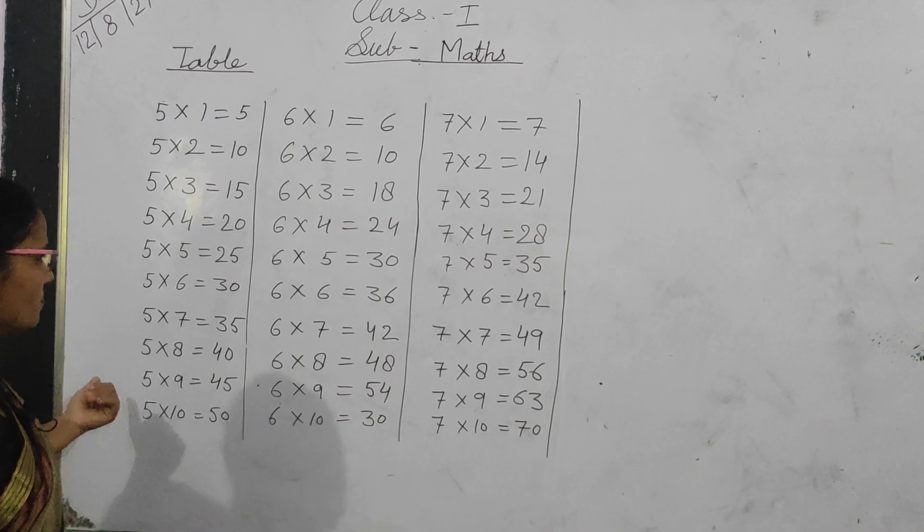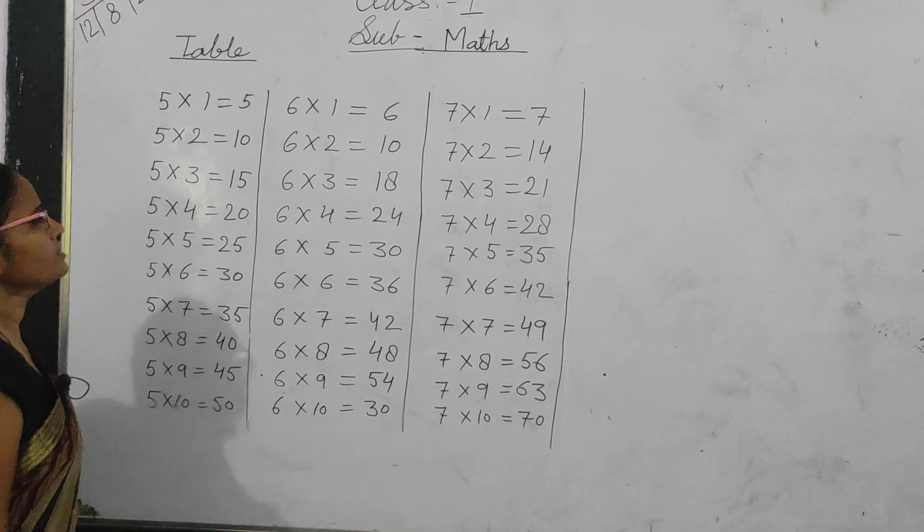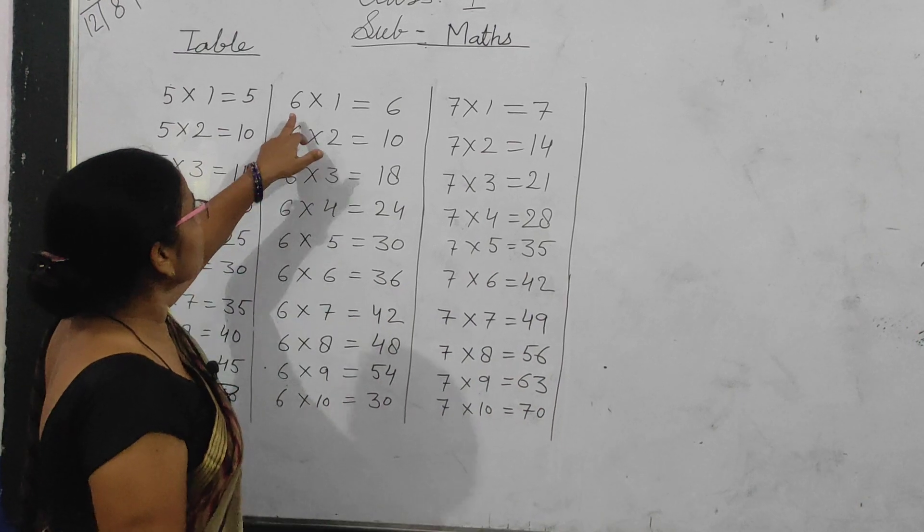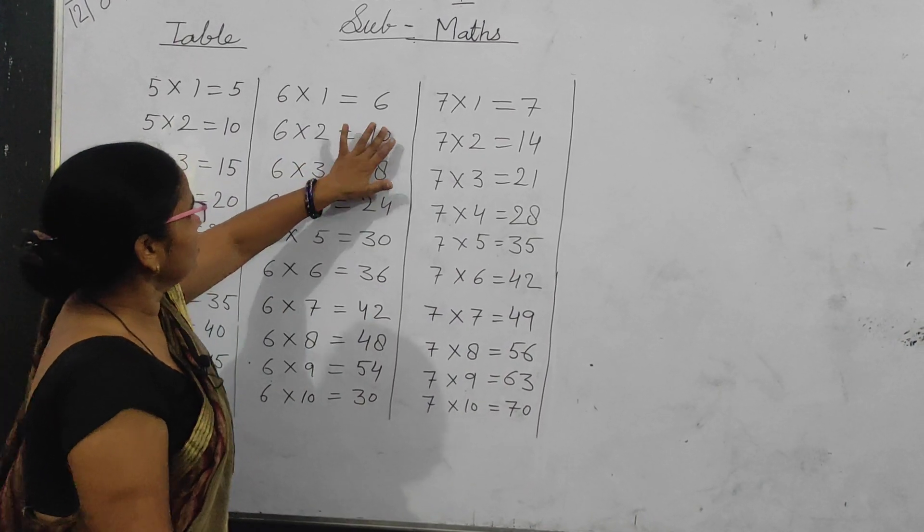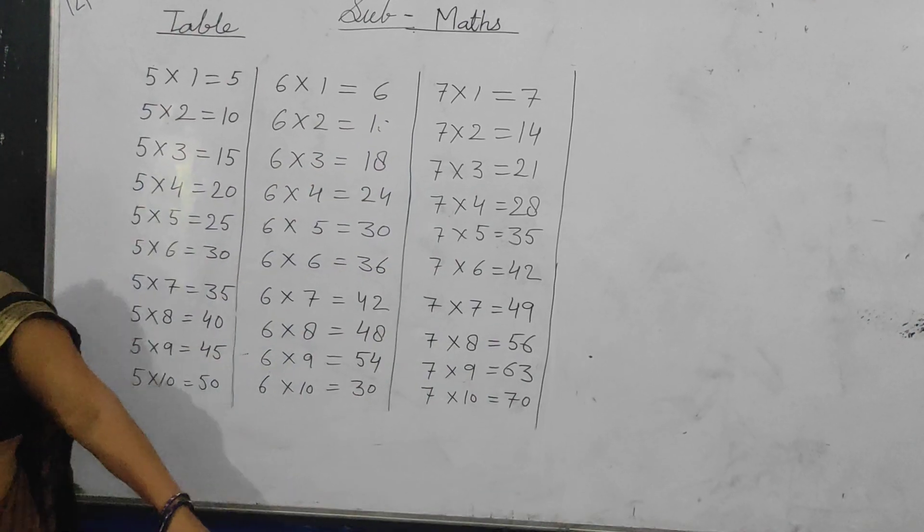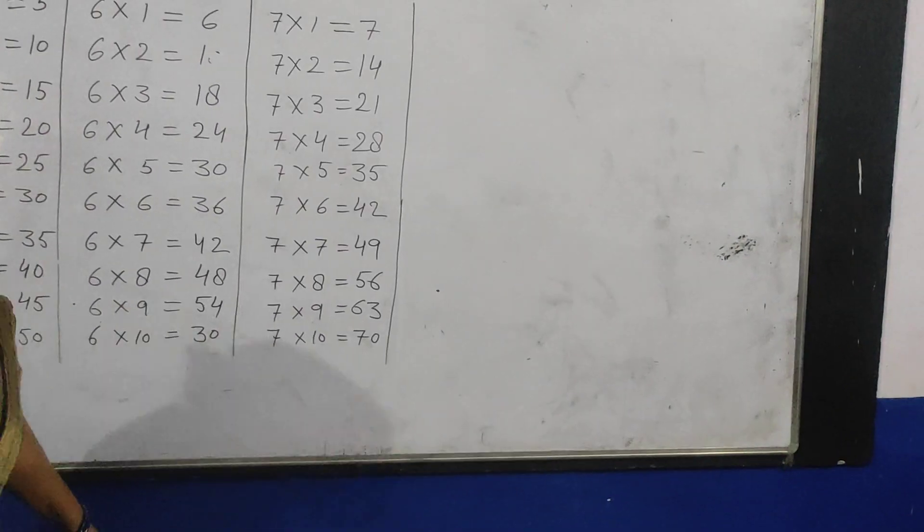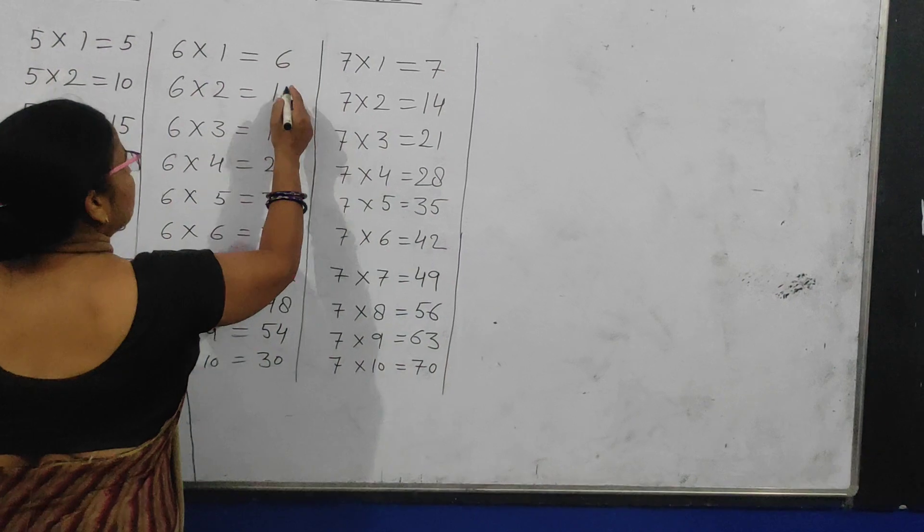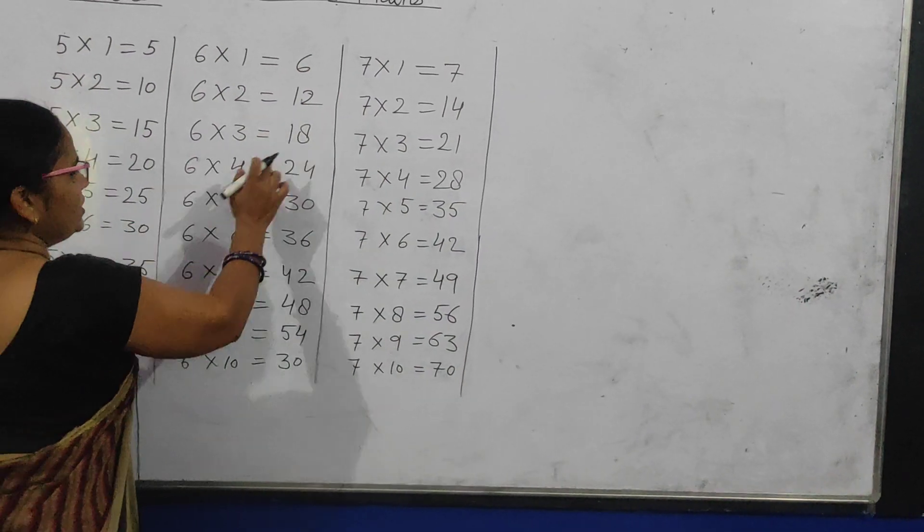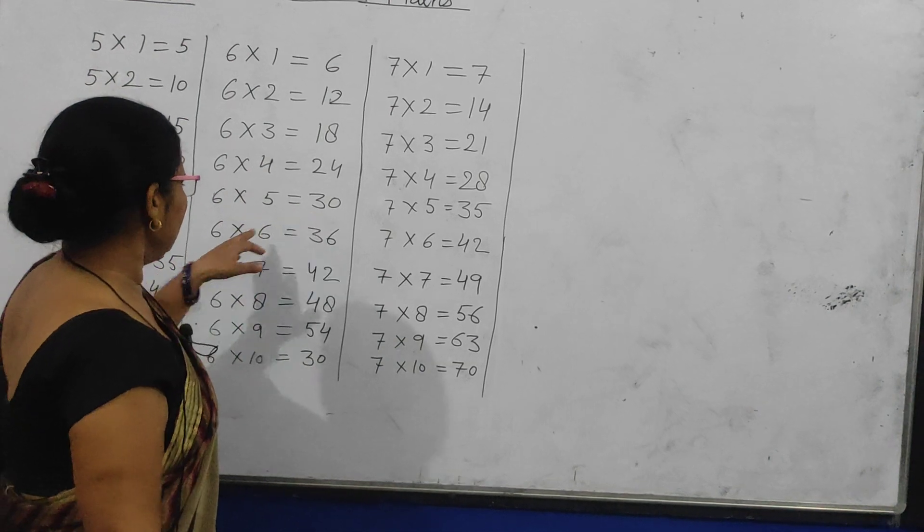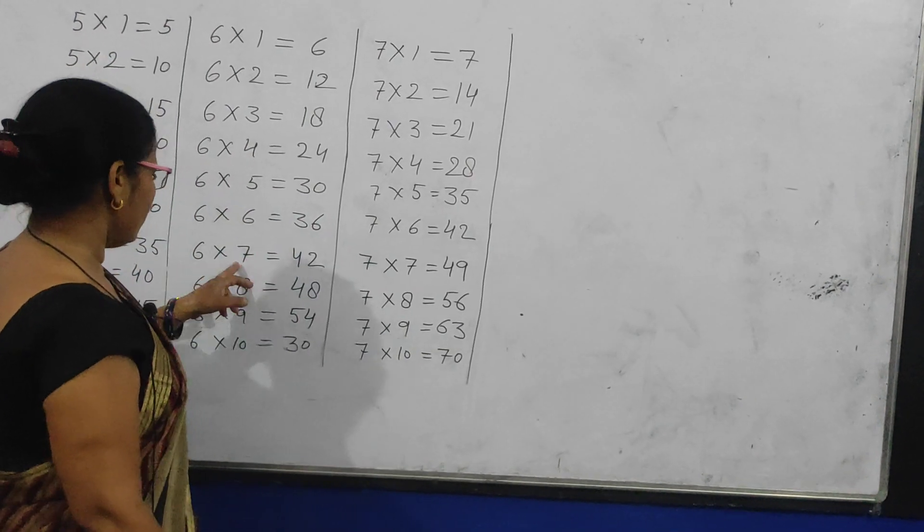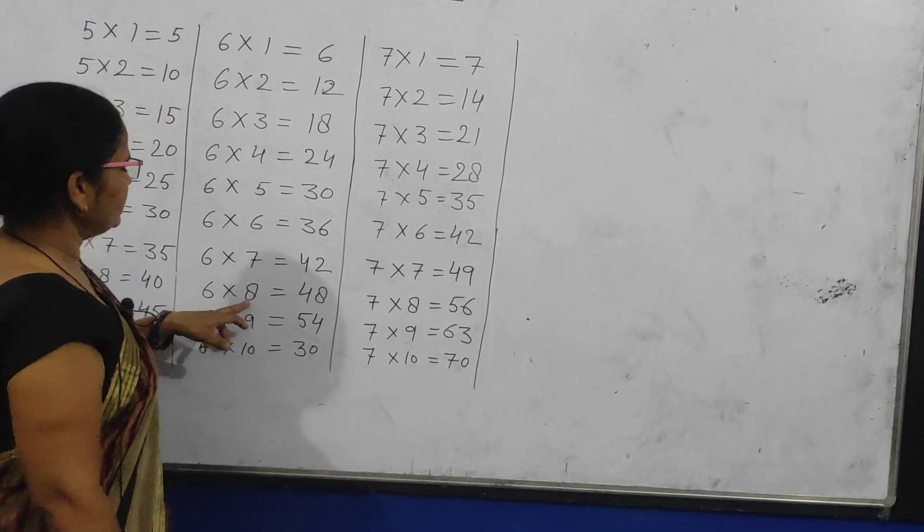Now let's move to the six times table. 6×1=6, 6×2=12, 6×3=18, 6×4=24.